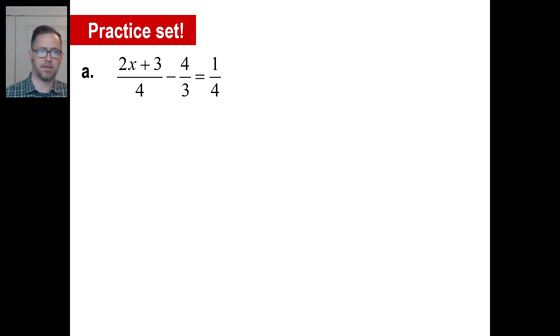Go ahead and try practice problem A. Pause it and give it a whirl. The common denominator here is obviously 12. So let's go 12 over one. If you're multiplying by 12 and dividing by four, you're multiplying by three. Three times 2X, 6X. Three times three, nine. There's a minus here. If you're multiplying by 12 and divide by three, you multiply by four, four times four, 16. One fourth, 12 times one fourth is three. So we have a 6X here and we have a nine minus 16 is negative seven. And that equals three. So 6X is equal to three plus seven. So X is equal to 10 over six or five thirds. And there we go.